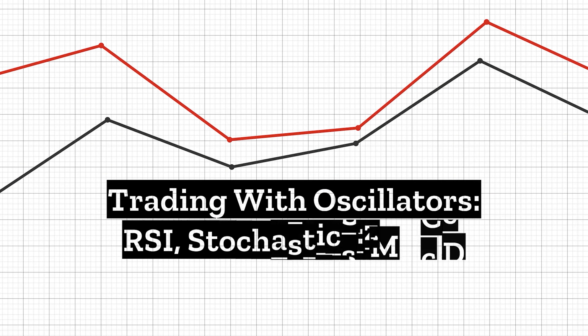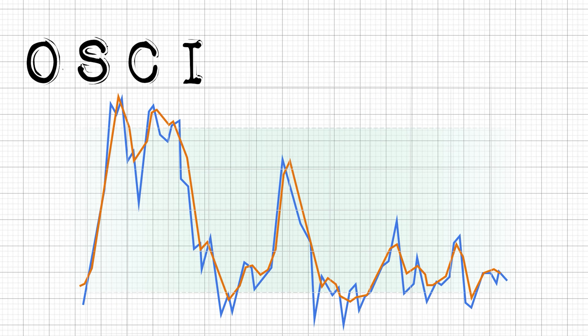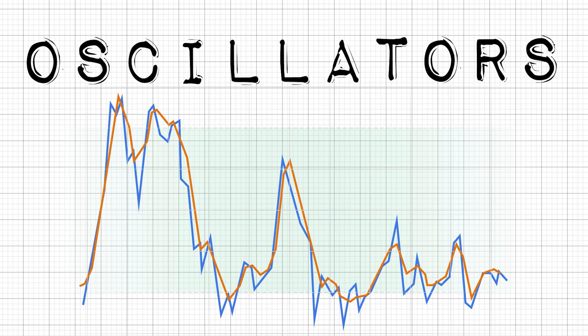Trading with Oscillators: RSI, Stochastics, and MACD. Oscillators are momentum indicators typically used with other technical analyses. They help individuals make trading decisions. Analysts consider them advantageous tools when they are struggling to find a clear trend in a company's stock price.